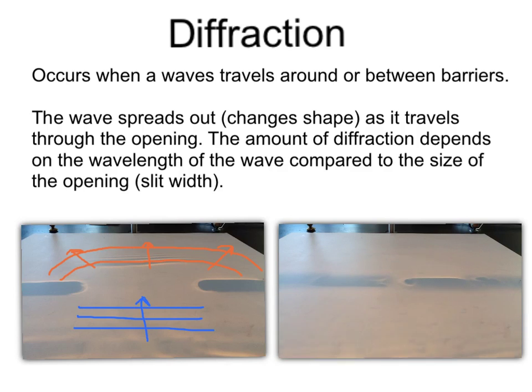As you can see, the waves become even more circular or more diffracted through this smaller opening. Here are our incident waves about to travel through our smaller opening. And as you can see, these waves become even more circular as they travel through the opening. We say these waves are even more diffracted as they change shape even more and spread out through the opening.